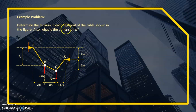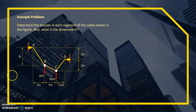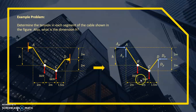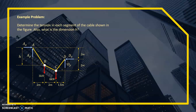Let's solve an example problem. Determine the tension in each segment of the cable shown in the figure. Also, what is the dimension H? We have a cable subjected to concentrated loads with four joints: A, B, C, and D. Supports at A and D are pins. There is a 3 kN concentrated load at joint B and 8 kN at joint C, with all distances given except H.